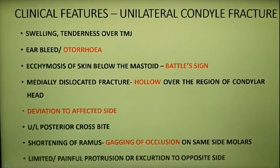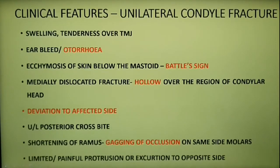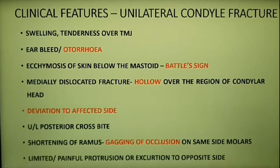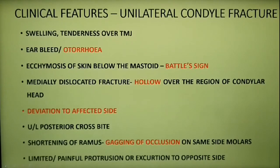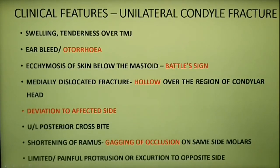During opening, the mandible deviates towards the side of the fracture — that is, towards the affected side. There is unilateral posterior crossbite. Displacement of the condyle from the fossa, or if the fractured condylar neck is overriding, causes shortening of the ramus on the same side and produces gagging of occlusion on the same-side molars. There is also limited or painful protrusion or lateral excursion.